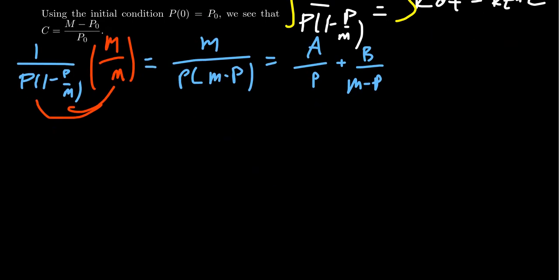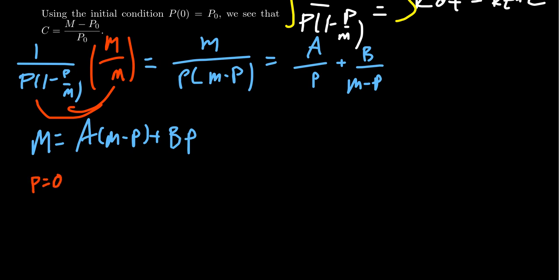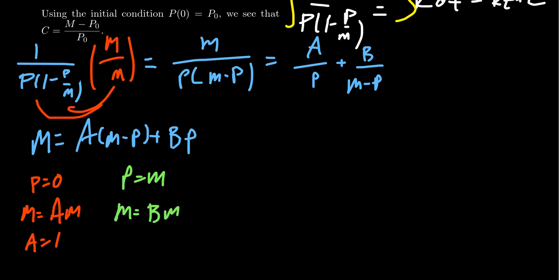Clearing the denominators gives m equals A times m minus p plus Bp. Taking p equal to zero annihilates the B term, leaving m equals Am, so A equals one. Taking p equal to m annihilates A, giving m equals Bm, so B equals one. Our partial fraction decomposition becomes one over p plus one over m minus p.